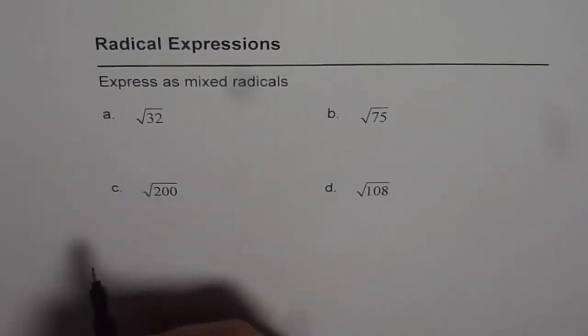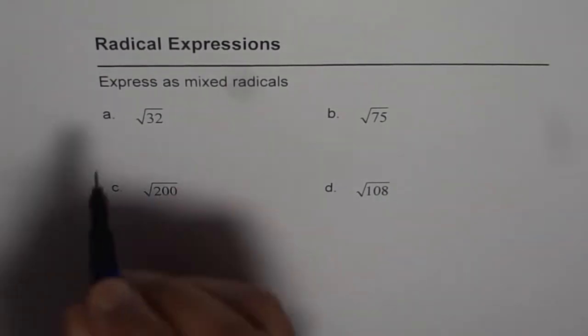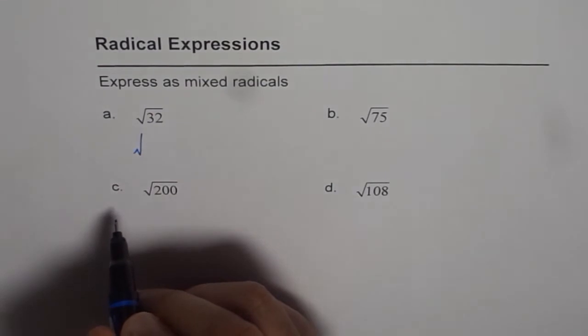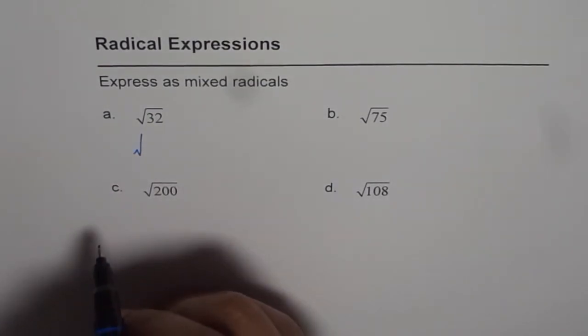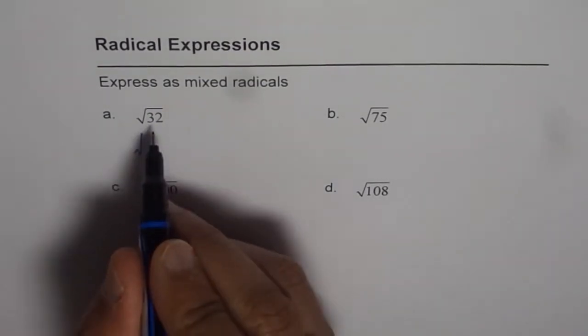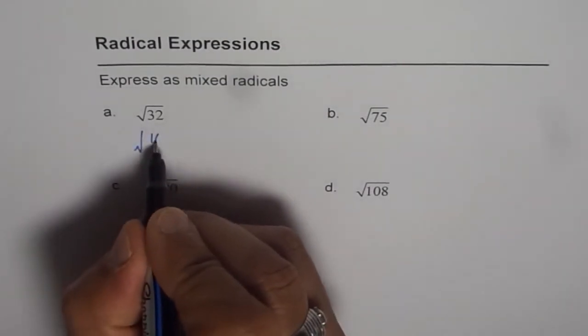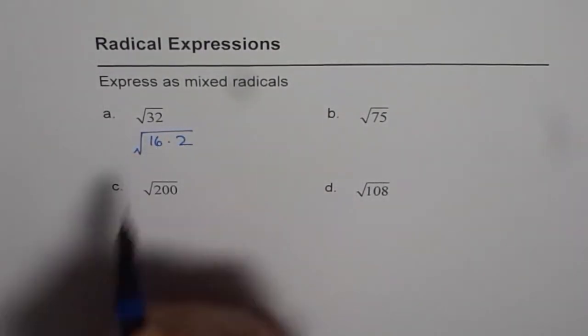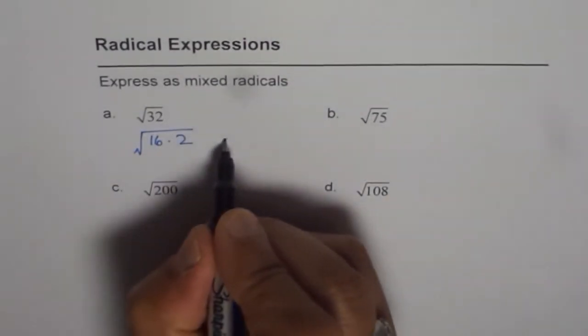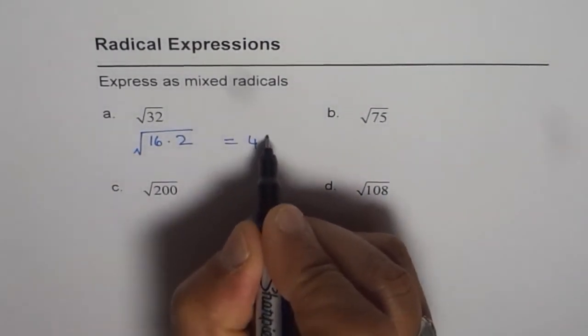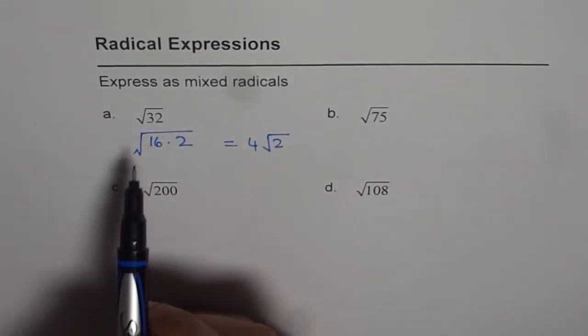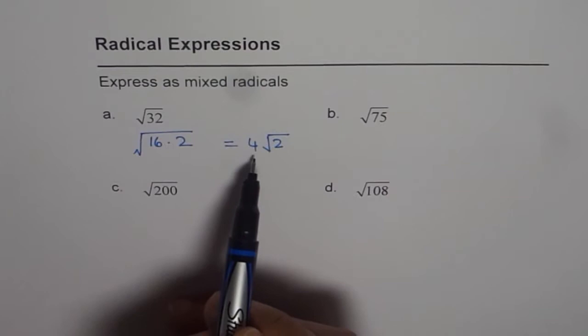So we have square root of 32. Now the idea is to break 32 into its factors so that some of them are perfect squares. Now 32 can be written as 16 times 2. 16 is a perfect square of 4 and therefore I can write this as 4 square root 2. So that is how I can convert this radical into a mixed radical.